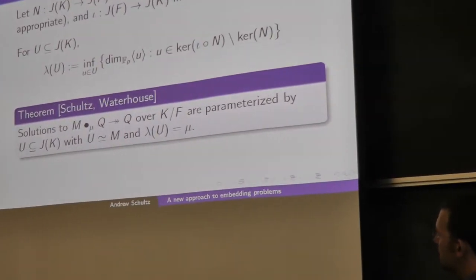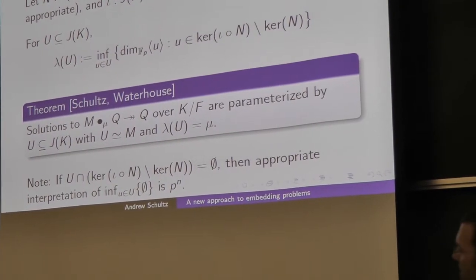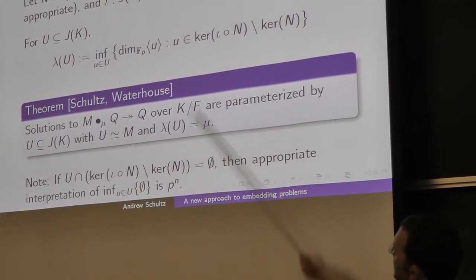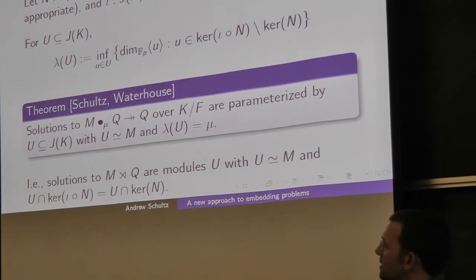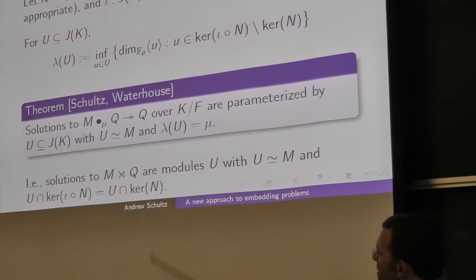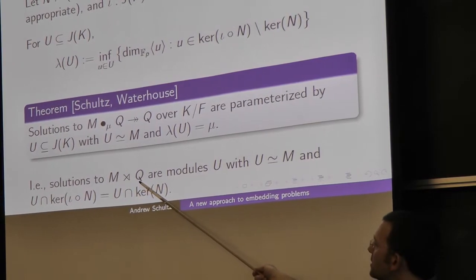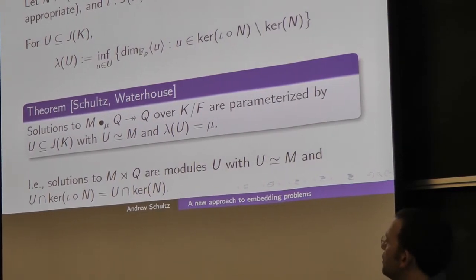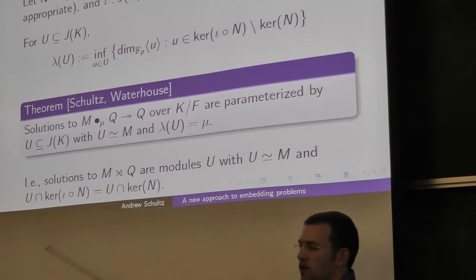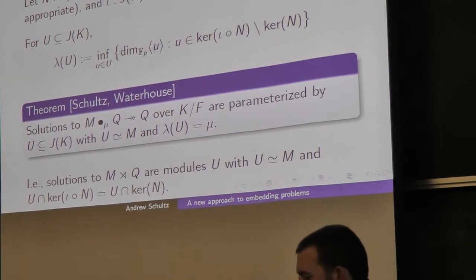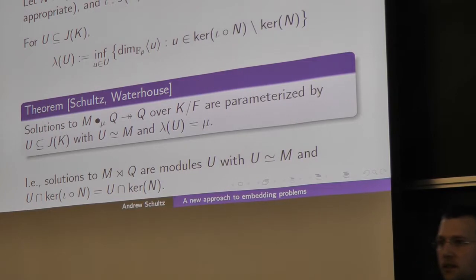When this set is empty, the right interpretation for the infimum is p to the n — technically that means if you want solutions to the semi-direct product embedding problem, you find all things with this property with the right kernels. It all works notationally even though it really should be split into two cases.